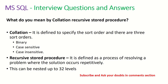What do you mean by collation and recursive stored procedure? Collation is defined to specify the sort order, and there are three types of sort orders: binary, case sensitive, and case insensitive. A recursive stored procedure is defined as a process of resolving a problem where the solution occurs repetitively. This can be nested up to 32 levels.